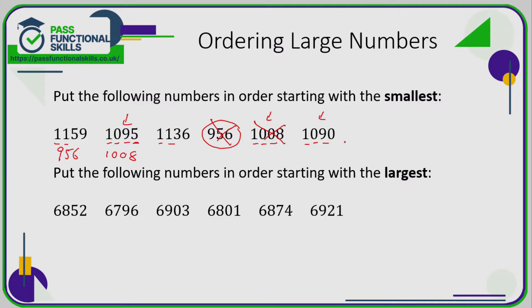The final digits are five and zero. Zero is less than five, so 1090 is the next smallest number, and 1095 is the next smallest after that. We're now left with the two numbers that begin with eleven: 1159 and 1136. Three is less than five, so the order is 1136 then 1159.